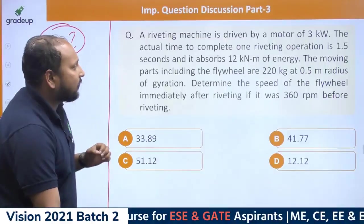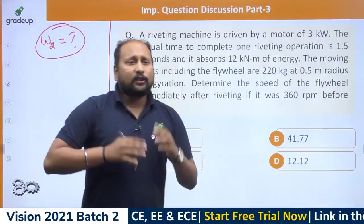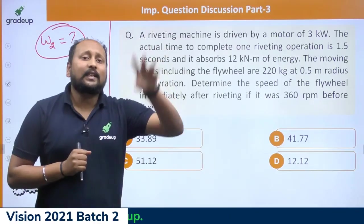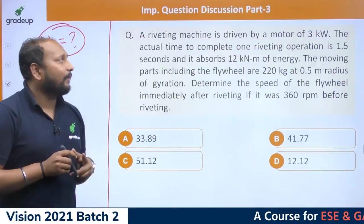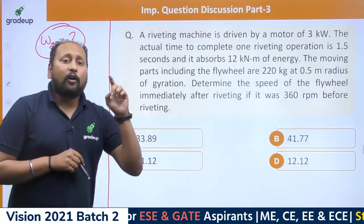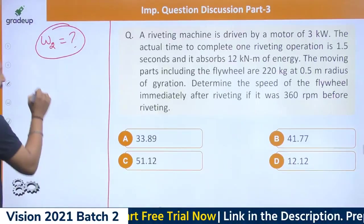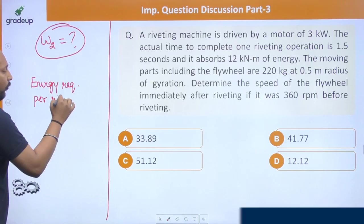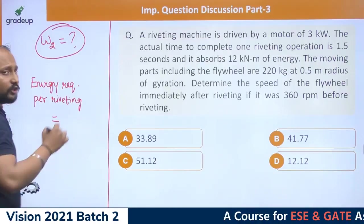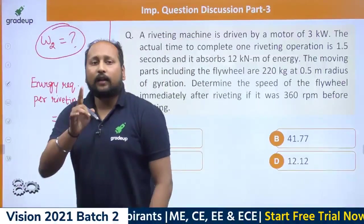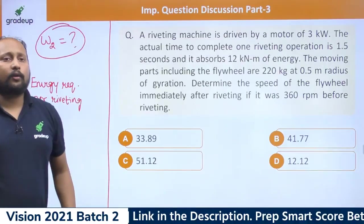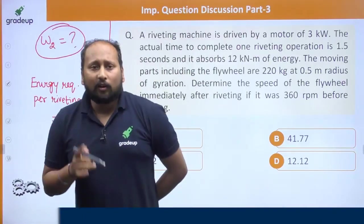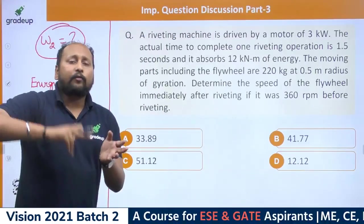First, how much energy is required for one riveting operation? Read the statement: it absorbs 12 kilonewton-meter, so energy required per riveting = 12,000 N·m. The flywheel is used whenever there is fluctuation of energy. From the motor, energy supplied in one second = 3,000 N·m. The duration of one riveting operation is 1.5 seconds.